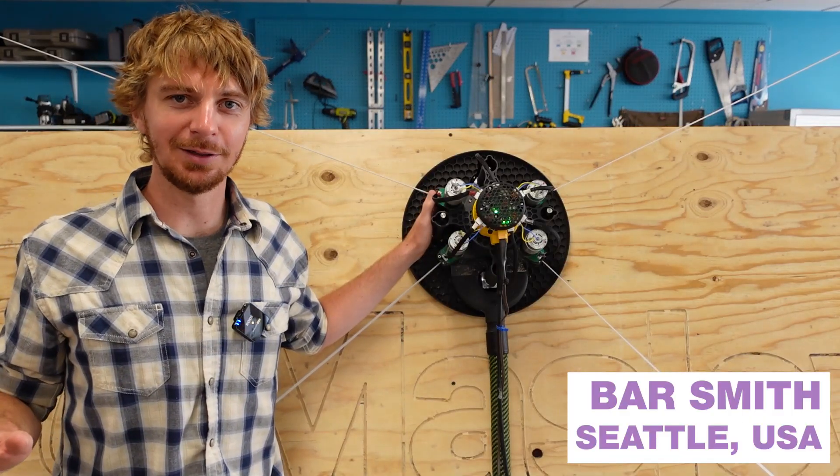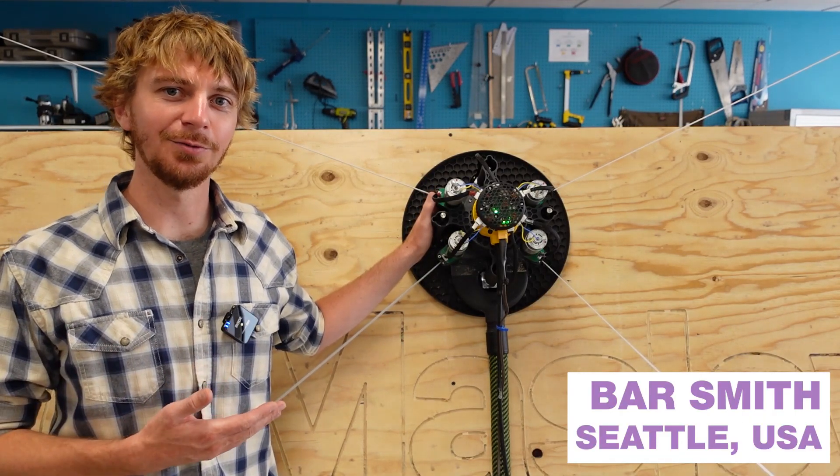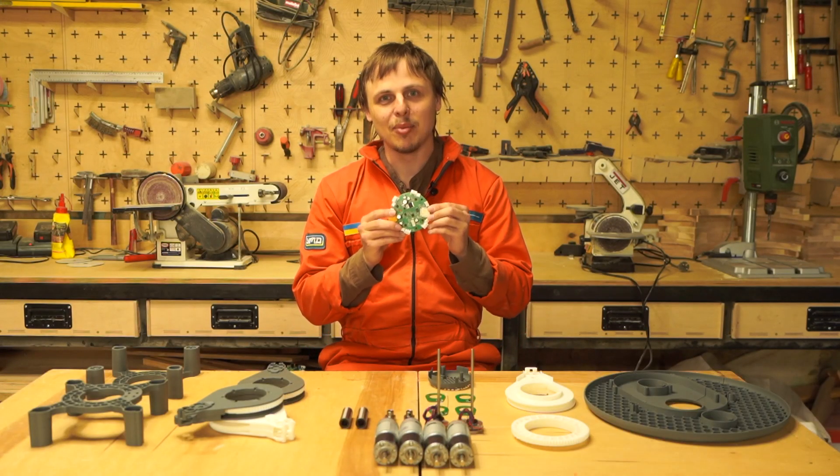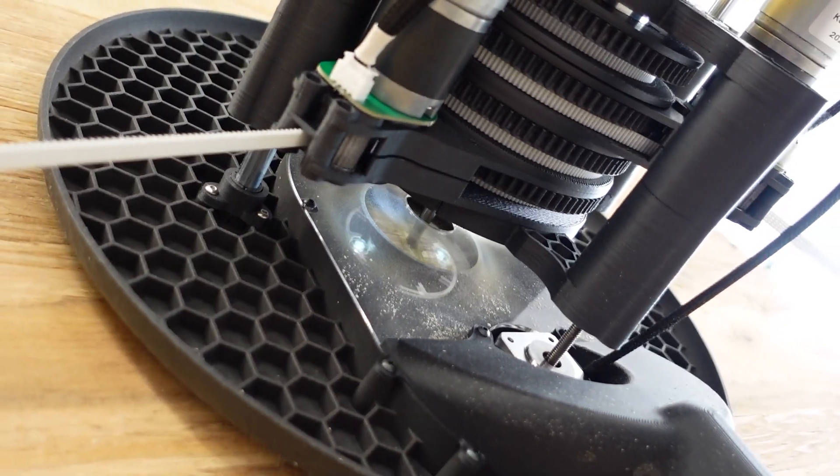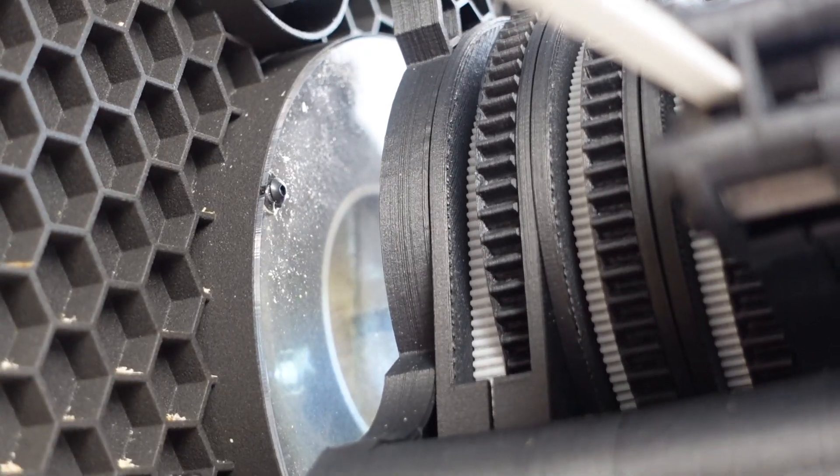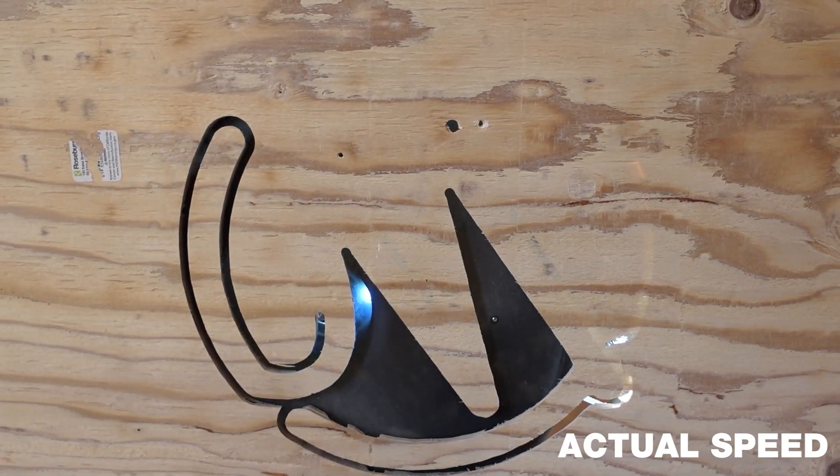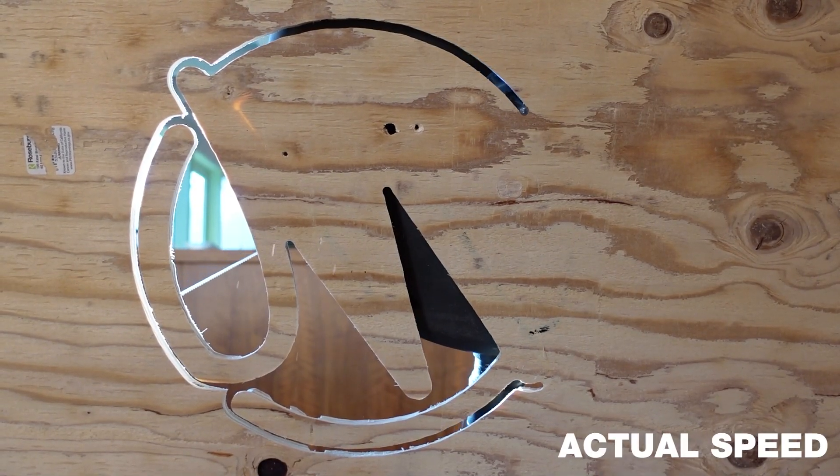We've taken everything that we learned from that experience to build Maslow 4. Maslow 4 is a complete redesign of the original Maslow. It's got this new Wi-Fi enabled 5-axis controller. It's much faster, it's fully self-calibrating, it can cut on both horizontal and almost vertical surfaces, and it will cut your 8x4 material with precision.